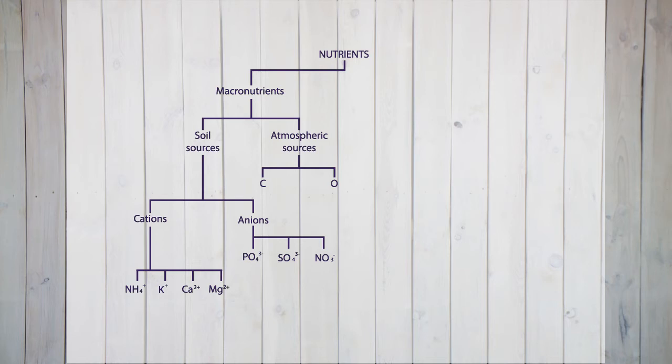However, the situation on cultivated land differs in at least two ways compared to natural systems. First there is harvest, and second there is fertilization. In the middle of the 18th century it was thought that plants only need nitrogen, phosphorus and potassium to grow. These components belong to the so-called macronutrients. Next to carbon, hydrogen and oxygen, plants need these components in large amounts. Later on it was found that calcium, magnesium and sulfur are also important nutrients.